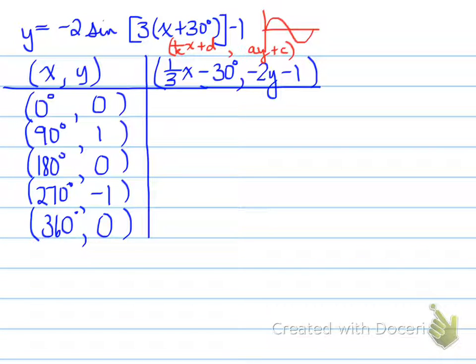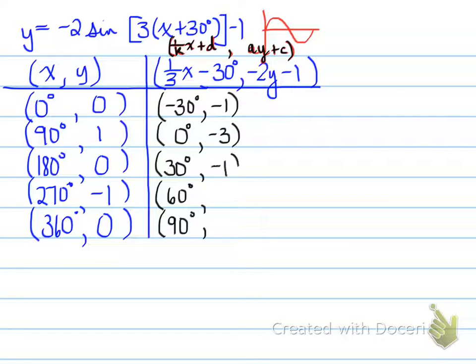So one-third X minus thirty and negative two Y minus one. Keeping in mind, what you see in the brackets should not be the same you see here. For example, three, it should be one over three. And this plus thirty should be minus thirty inside the table. We plug these numbers into our actual coordinates, the new coordinates we have for our basic sign, and we find out that the X and Y values turn out to be these values. You plug in these X values into this X equation to give you these, these Y values into the Y equation to give you these Y values.